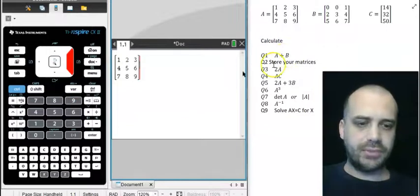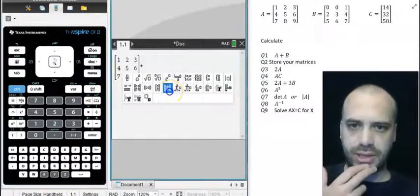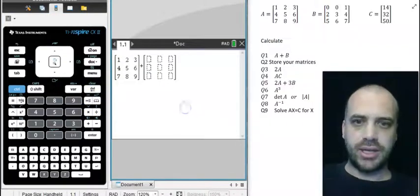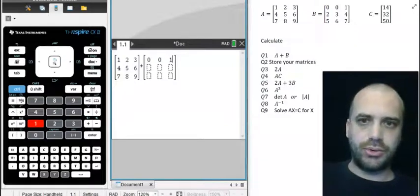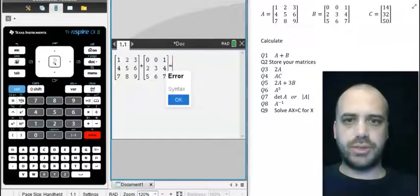I want to add that to matrix B, so same process again, plus create another matrix, another 3x3 matrix, and then put in all of your numbers.